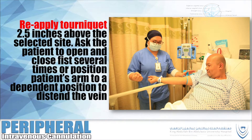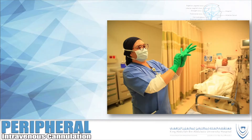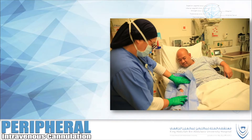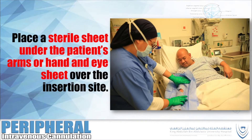Re-apply tourniquet 2.5 inches above the selected site. Ask the patient to open and close the fist several times, or position the patient's arm in a dependent position to distend the vein. Do hand hygiene. Don sterile gloves. Place a sterile sheet under the patient's arm or hand, and an eye sheet over the insertion site.